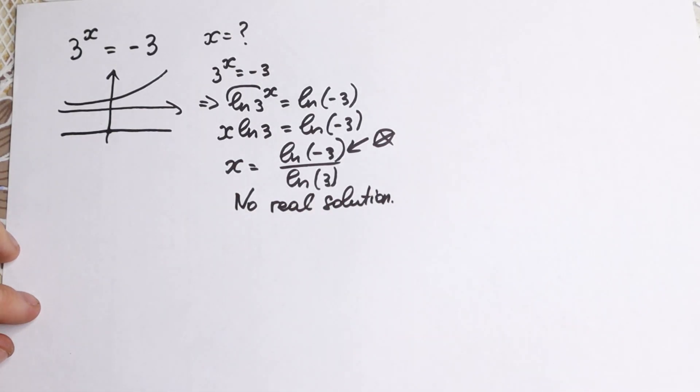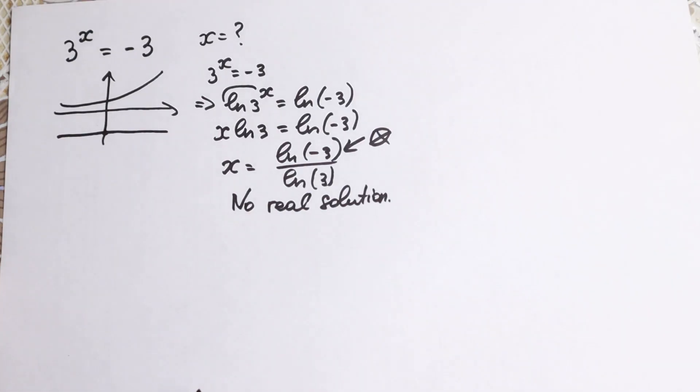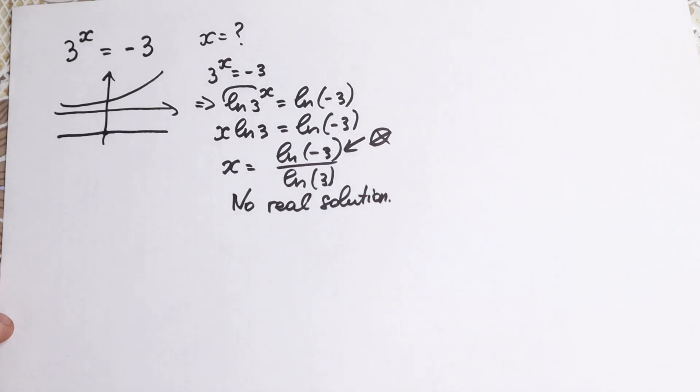Let's try to find complex roots. Maybe we'll have complex roots — maybe we'll find real roots if it's possible. Let's do this.